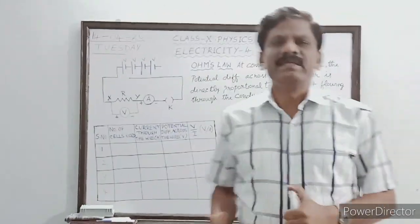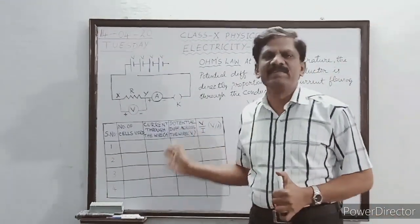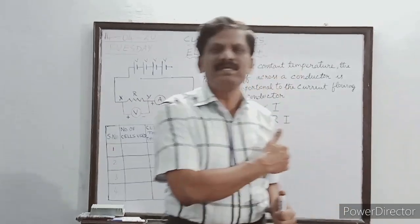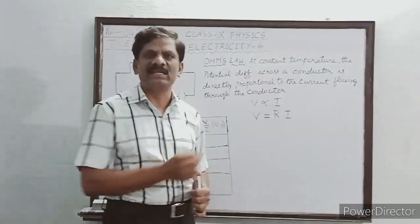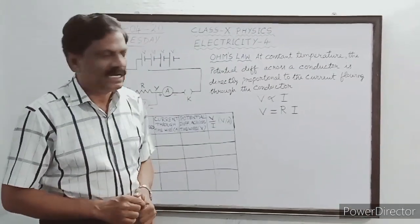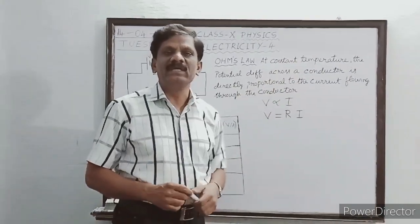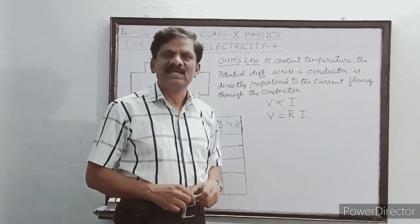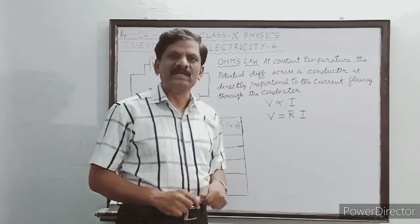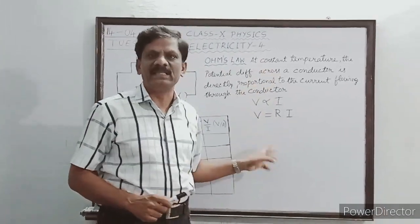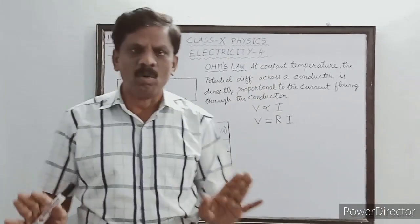At the end of this Ohm's law verification, we will come back to what is meant by the resistance of an electrical conductor, and we will also explain why we have mentioned that the temperature is constant. You are going to understand these two facts only at the end of the verification.